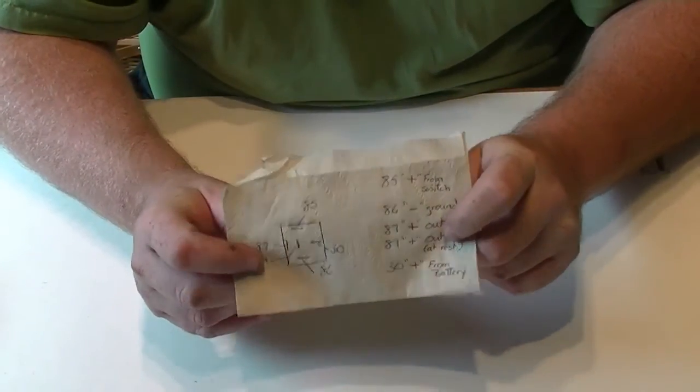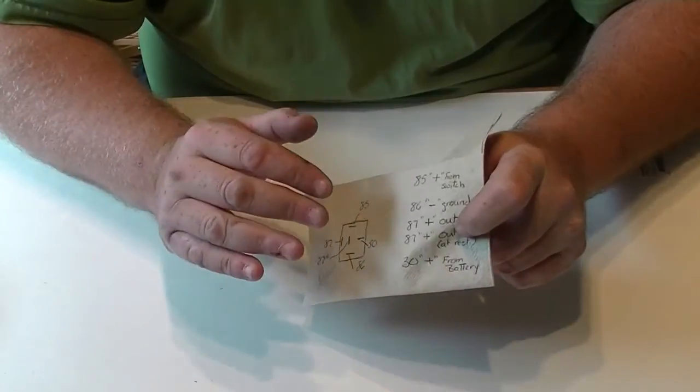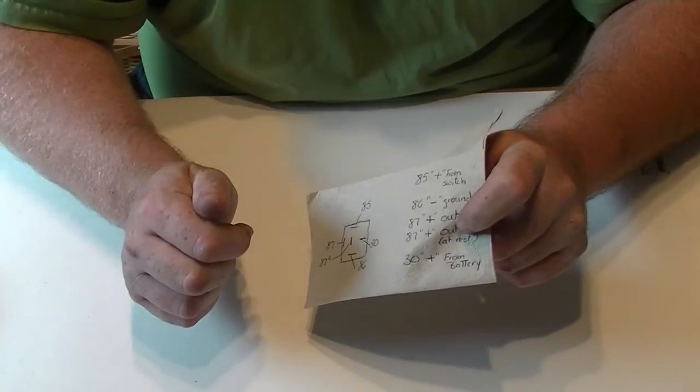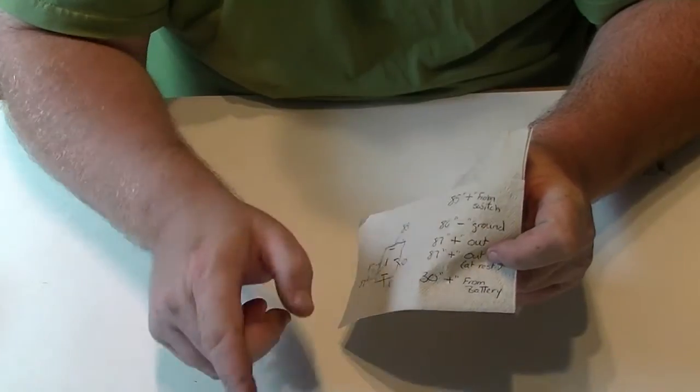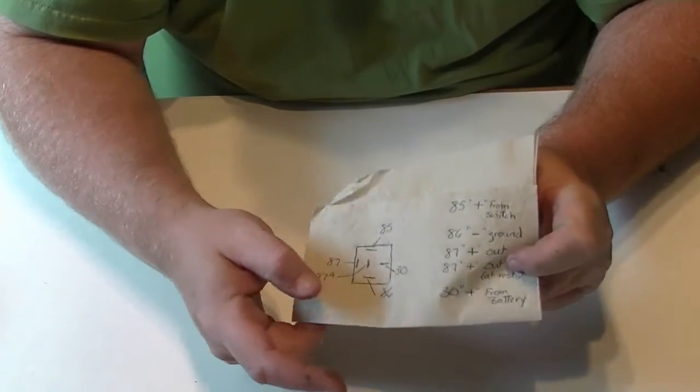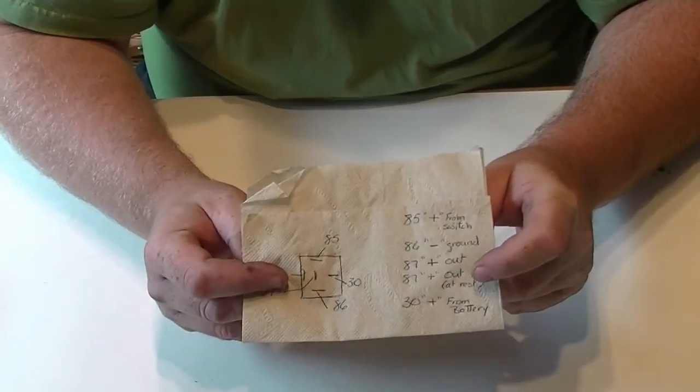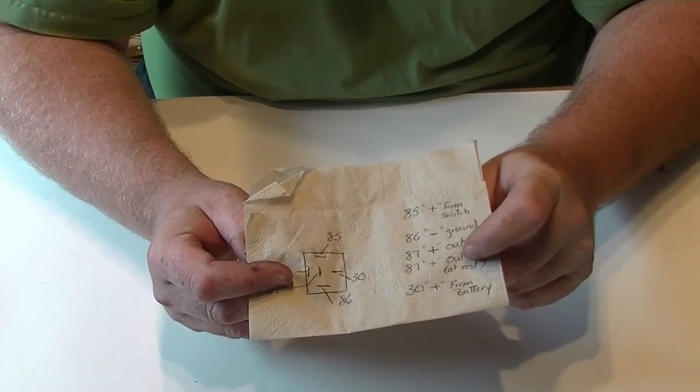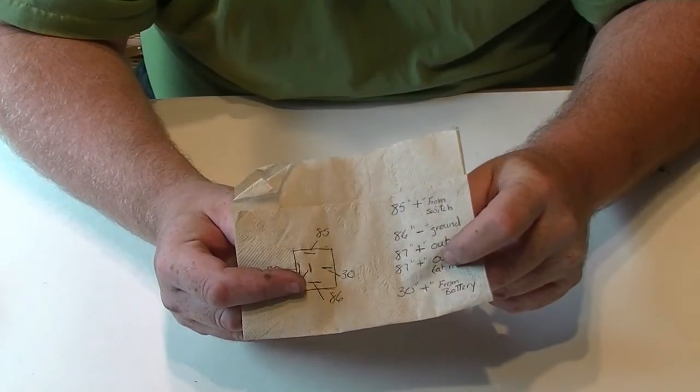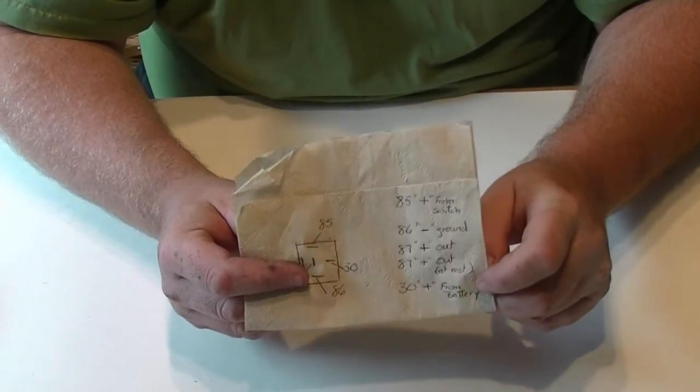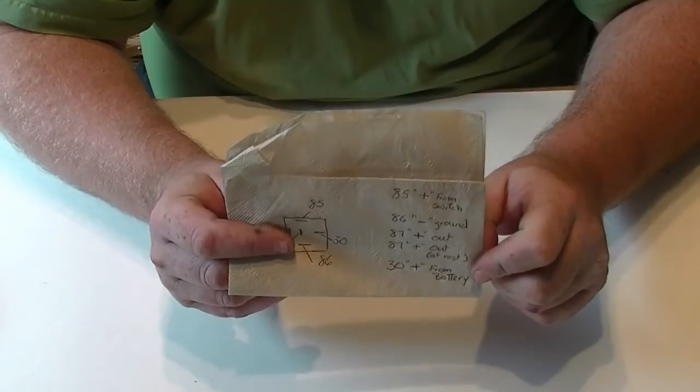Now this one is when the relay is at rest. So when your switch inside your vehicle is turned off, the power is now routed from the battery to number 87A, the center contact. Now there are occasions where it's useful, but in most cases you don't use it. So we're going to cover that one up and make sure it's secure. And then 30, now that's going to go to your battery.